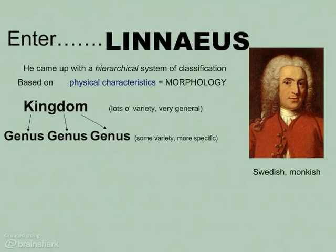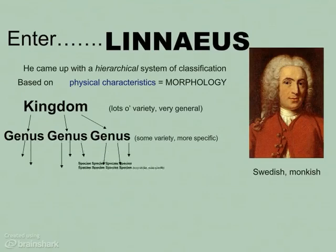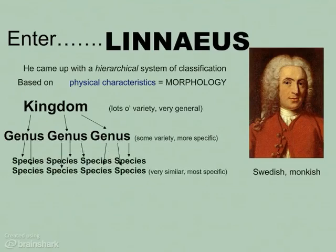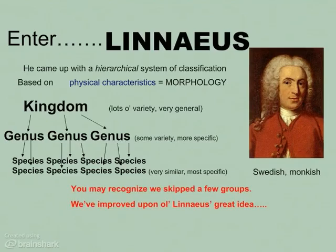So there's a lot of variety, and the similarities between us and sponges are pretty general. We get down to the genus level, and these organisms in the same genus are going to have some variety amongst them, but they're going to be pretty darn similar. These different genera are broken up into species, and the organisms within the species would be very similar — or most specific — able to interbreed with one another.